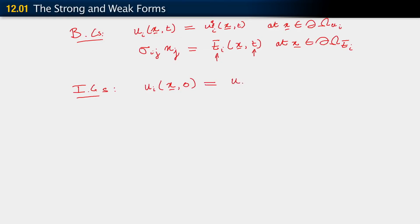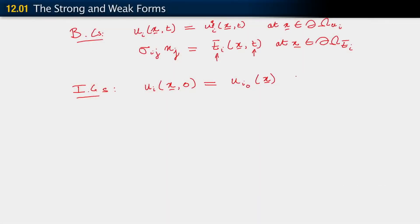So we have u_i at some position x but at time t equals 0 equals u_i naught, which could be a function of position. We need to allow for initial conditions to be defined at every point. So for every point x, we have an initial condition of the displacement, which basically says, what is the initial configuration of the body? So this holds for all x in omega.